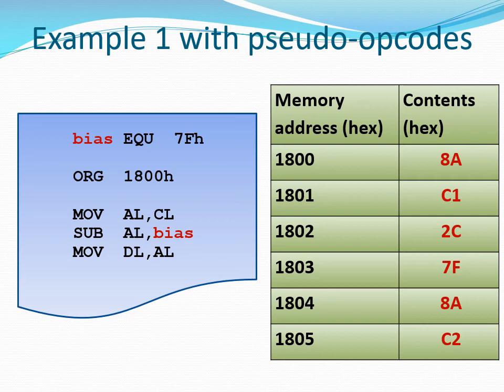Where BIAS appeared in the instruction, we replace it using the value 7FH. The third instruction in the program section is the one that makes use of the predefined symbol BIAS. When we assemble that instruction, BIAS is replaced with the value 7FH. As we can see in memory, that value 7F — which is equal to BIAS — is stored at memory address 1803H.